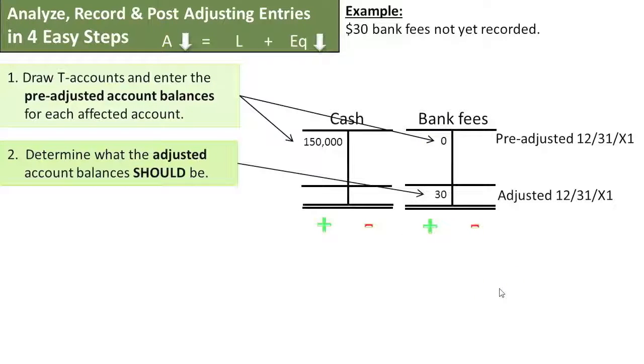The answer is you would have $30 in bank fees, which we would show by debiting it $30, and our cash would have decreased by $30 to a balance of $149,070 as a debit.